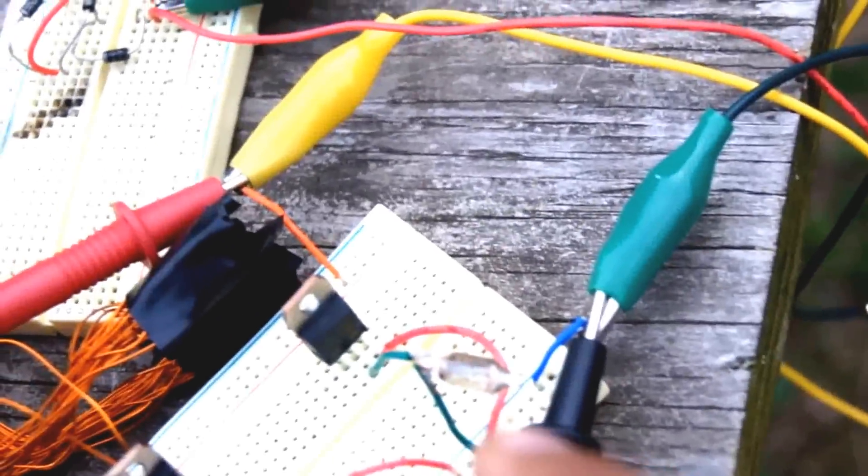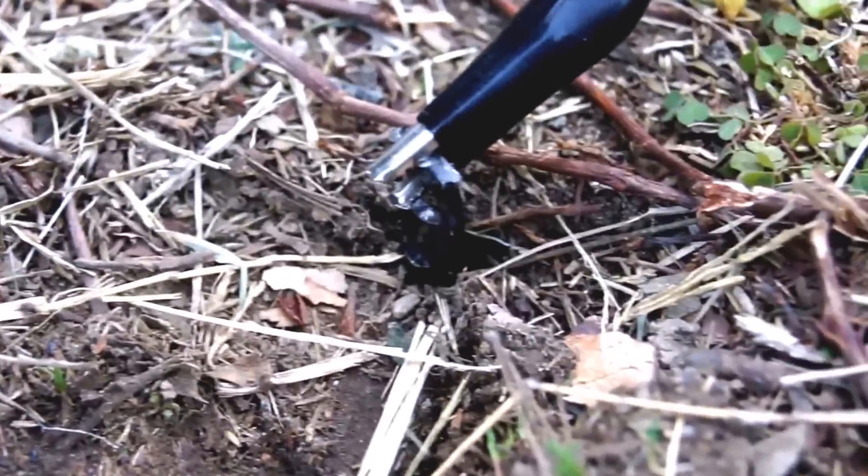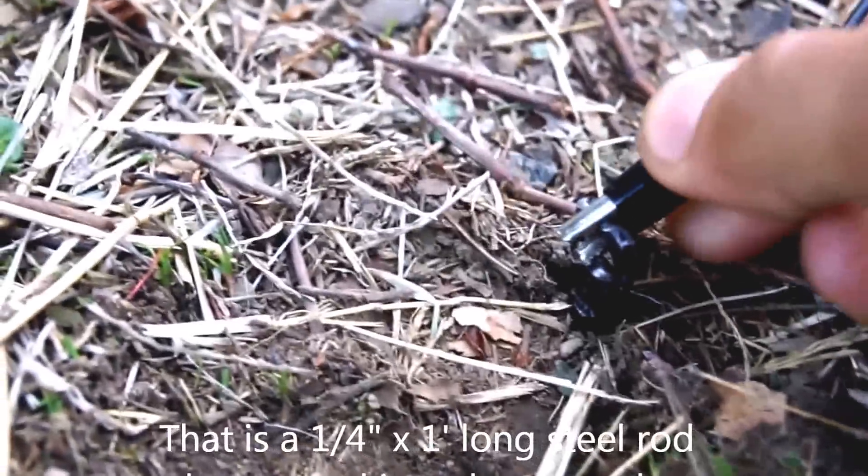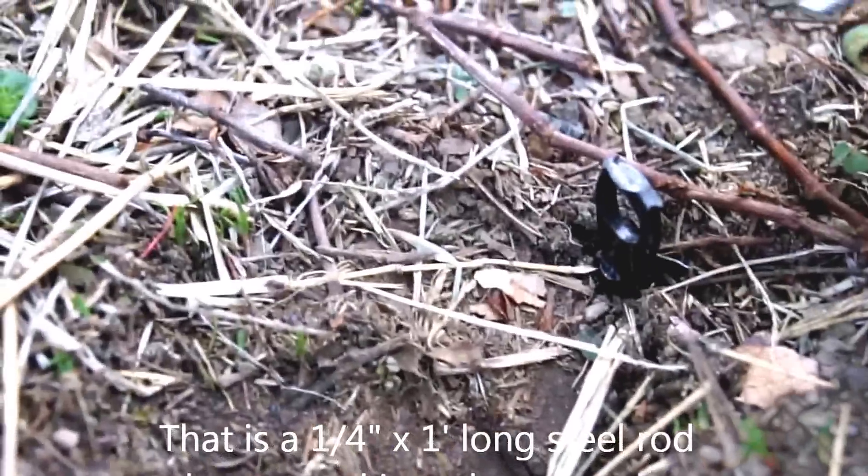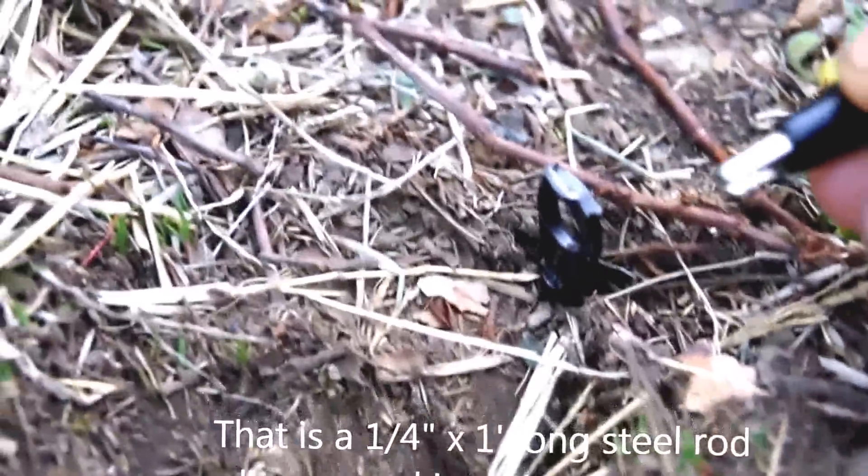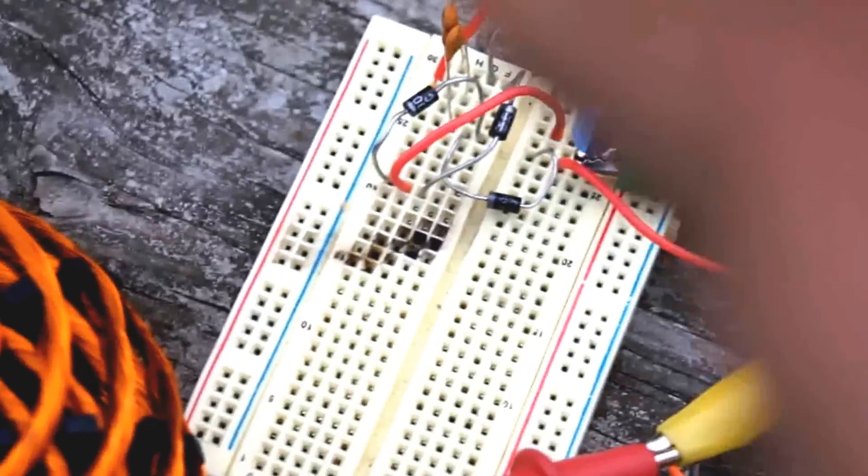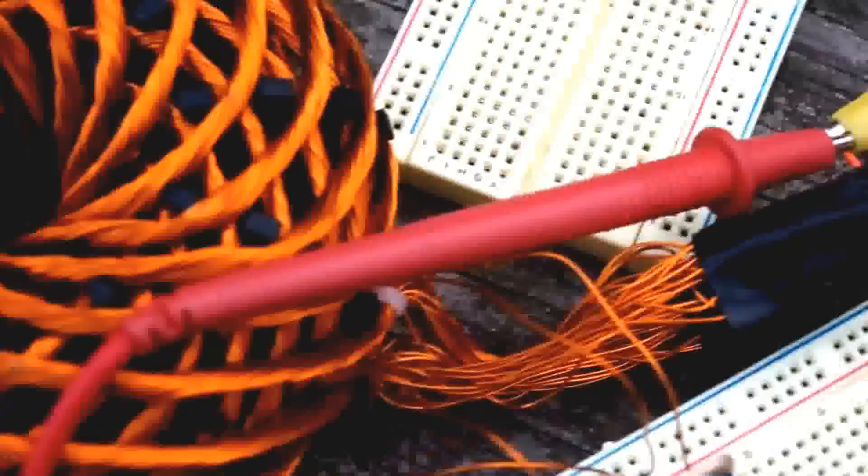I also forgot to mention that the negative ground has to go right into the dirt. So this is my negative right there. So if I take this off, the whole process stops. So I have to plug this right into the ground and give it a good negative discharge in order for the electricity to stay in these capacitors.